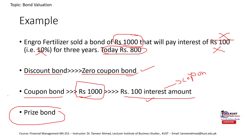Here comes the Prize bond. A Prize bond is neither a coupon bond nor a zero coupon bond — there is no interest and no discount. For example, the State Bank of Pakistan would sell a bond of 40,000 rupees; if you purchase and resell it you sell at 40,000 rupees with no discount and no interest. People buy Prize bonds because of lucky draws — they earn through prizes in those draws.